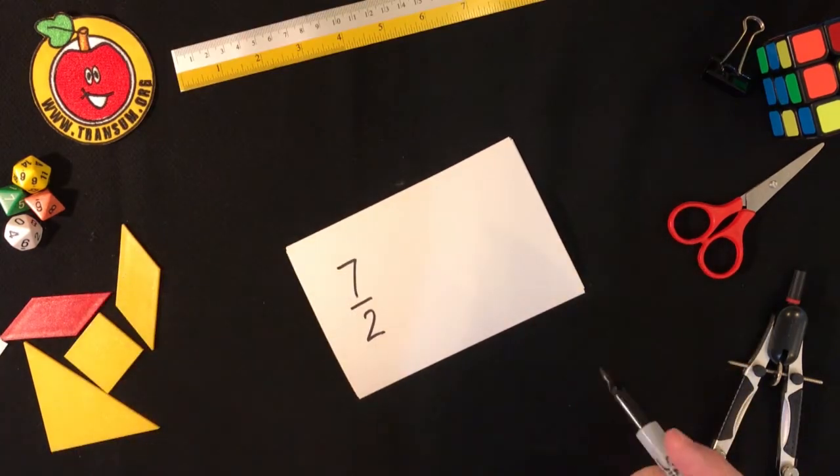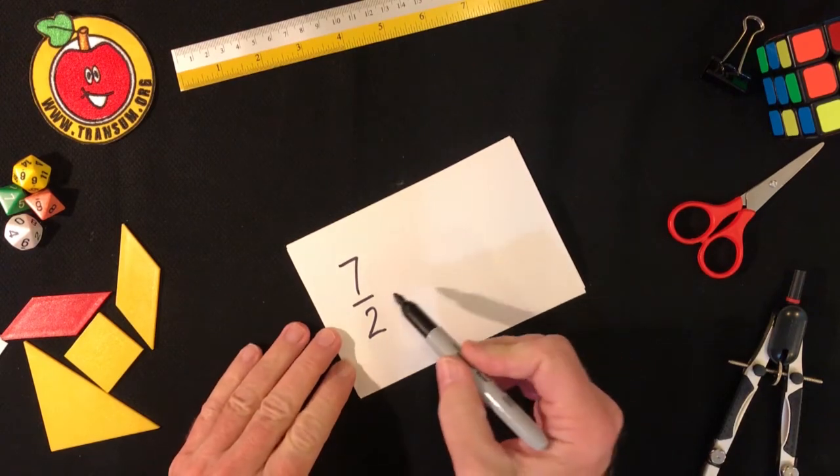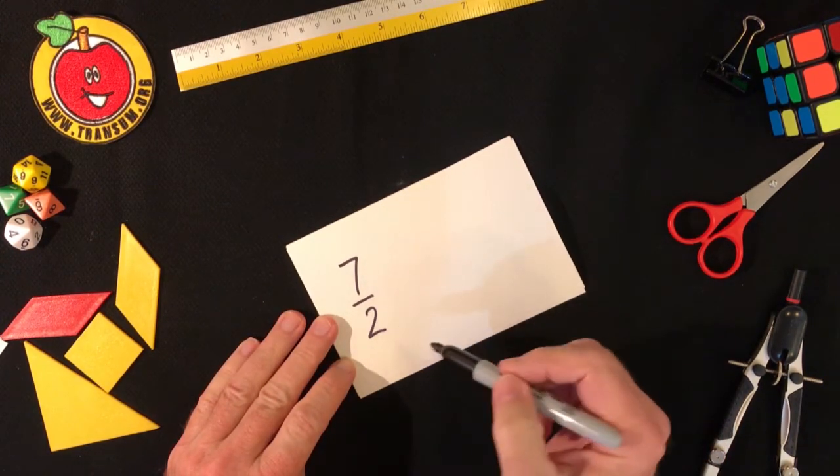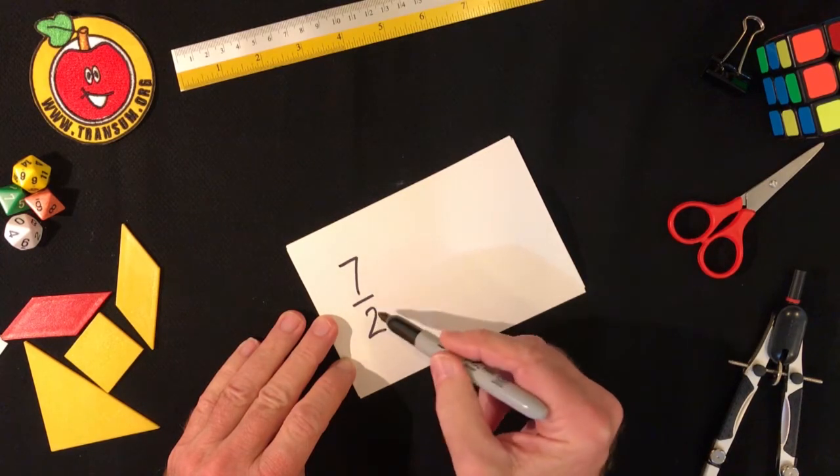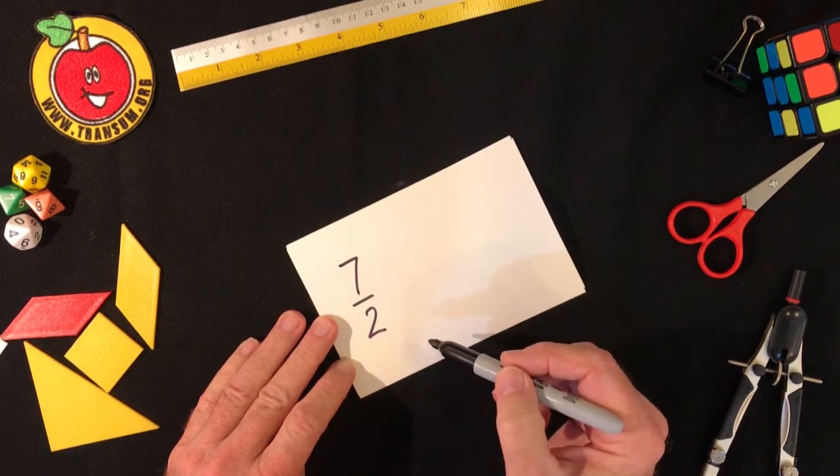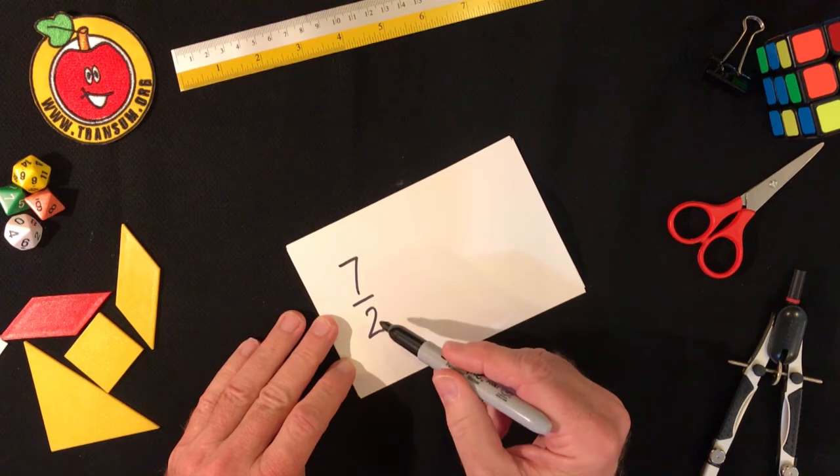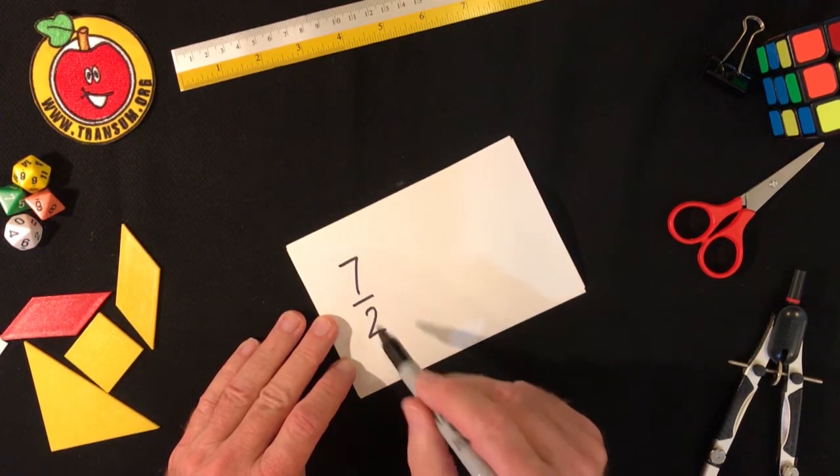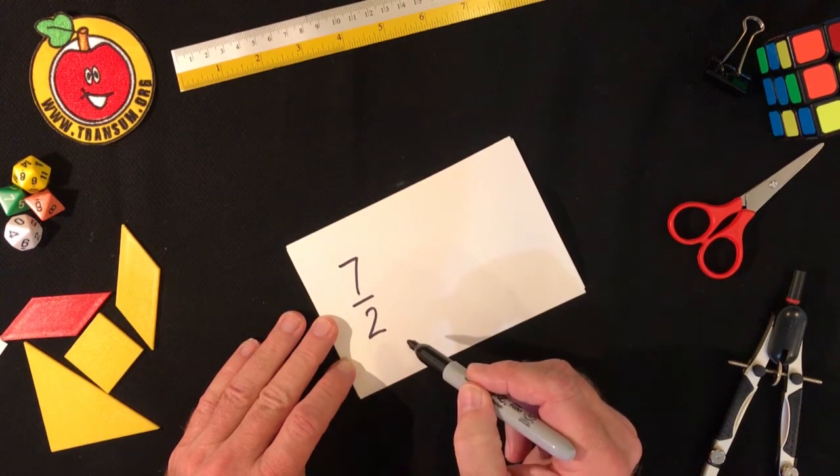Okay so what's the trick for changing an improper fraction into a mixed number? Let's look at this one, it's seven halves. Seven over two means seven halves. Well as you know there are two halves in a whole one. So how many whole ones are there all together?